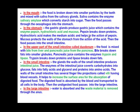When food enters the stomach, it is acted upon by gastric juice. The glands present in the stomach are known as gastric glands, and these gastric glands secrete gastric juice. This gastric juice contains three important things: the enzyme pepsin, hydrochloric acid, and mucus. Many questions about these three components are asked in board examinations.